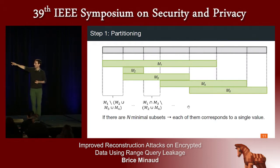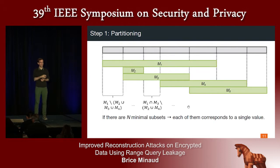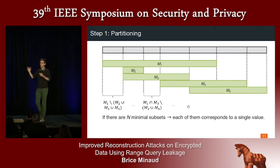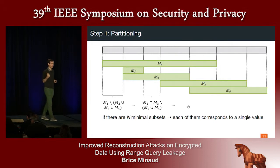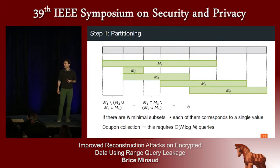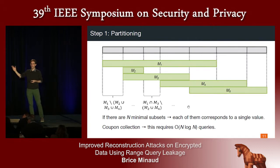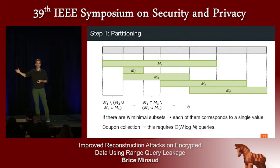These minimal subsets partition the set of all records. Here the gray bar at the top has been partitioned into seven subsets. If the number of minimal subsets equals n — in this case seven — then you can immediately deduce that each minimal subset must be the set of records matching a single value in the database. How many queries do you need to achieve this? When you do the analysis, this reduces to a variant of the coupon collector's problem, and you get that you need only roughly n log n queries before the partition yields n distinct non-empty disjoint subsets.